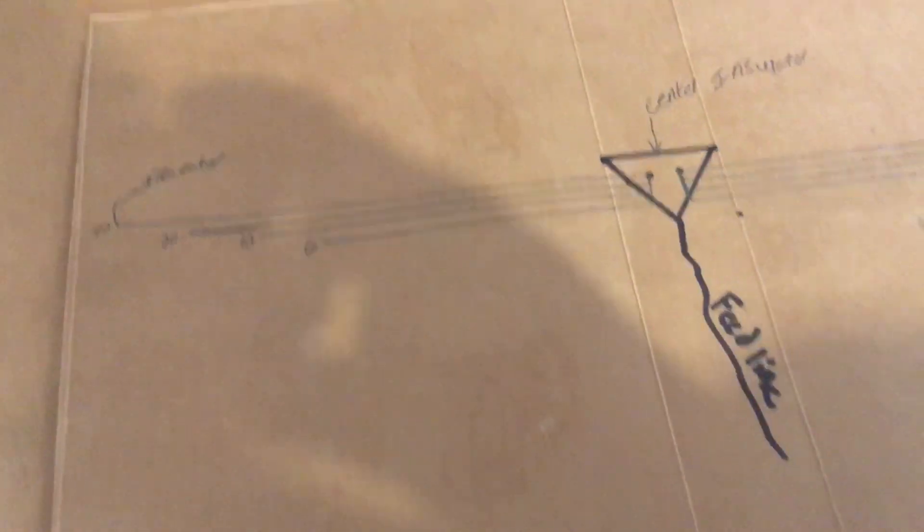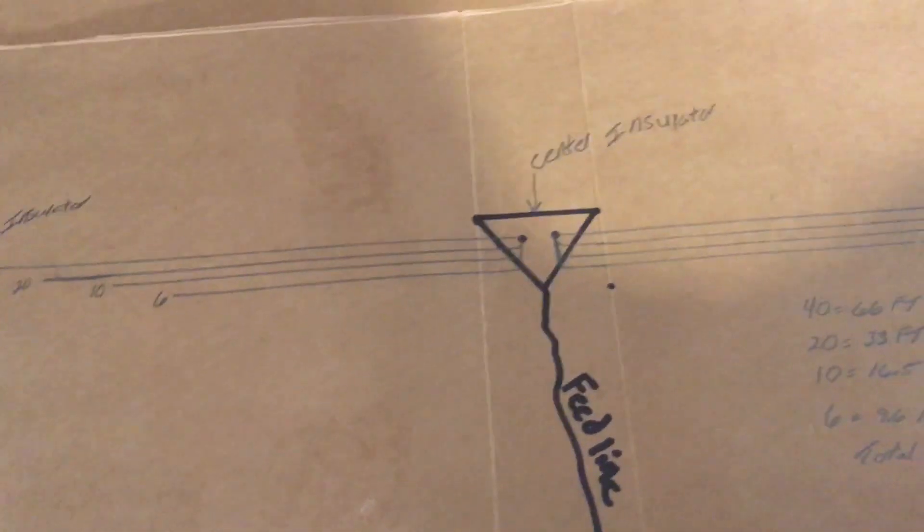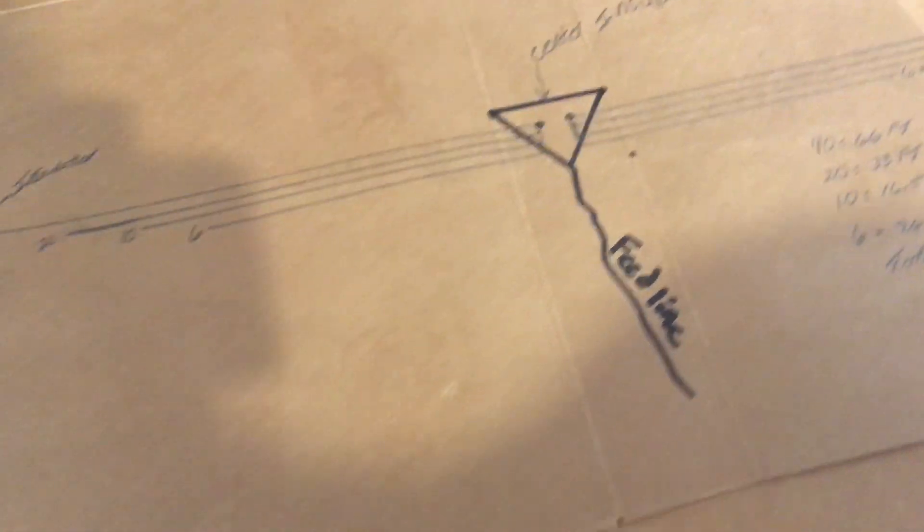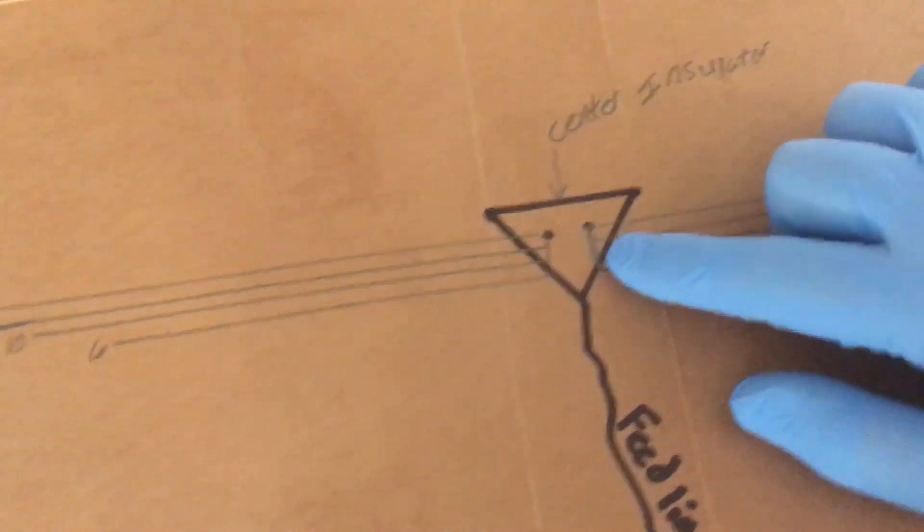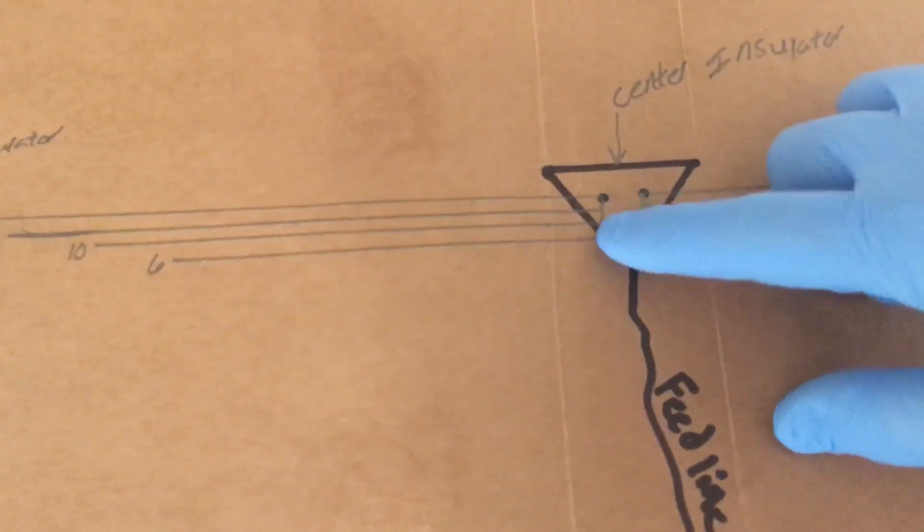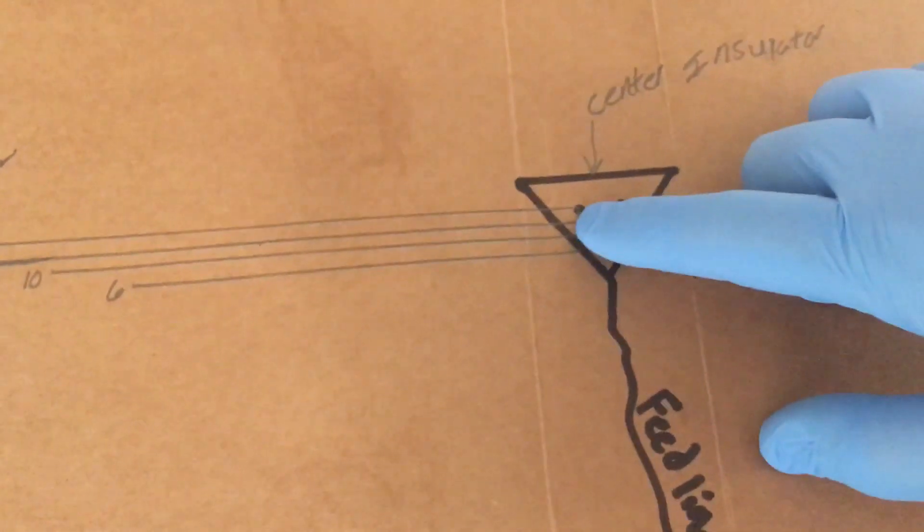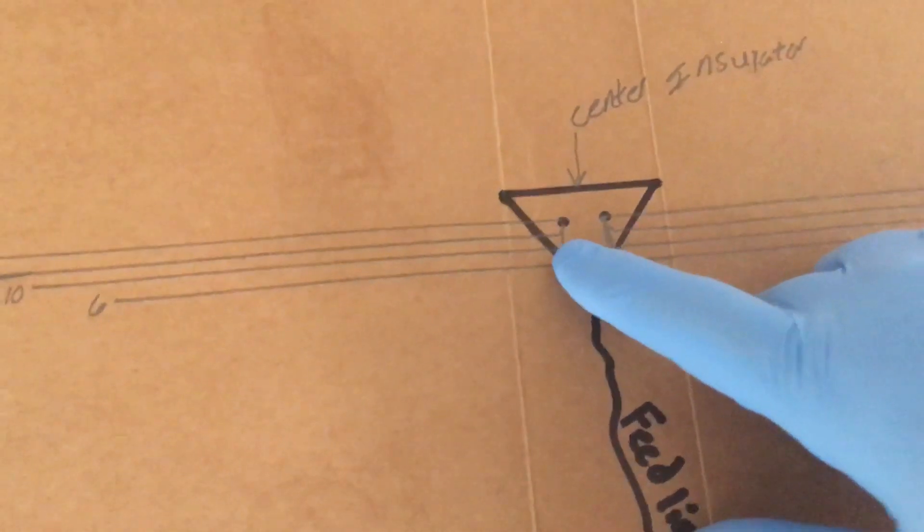All right, FuzzPieGuy here. I drew up this diagram to help you out with the measurements of the dipole. You have your center insulator here, with a bolt here and a bolt here with the ring terminals, how mine is.